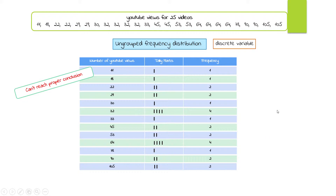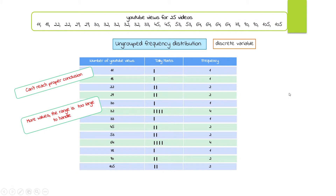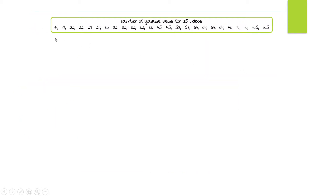When the number of observations keeps increasing, the range becomes too large and the number of rows will increase, making it hard to say much about spread-out data. In this case we are going to use a grouped frequency distribution, where we split all observations into groups, place observations into different groups, and then reach conclusions about the data.